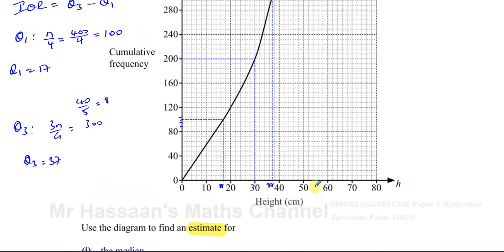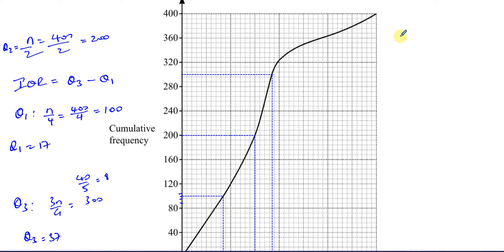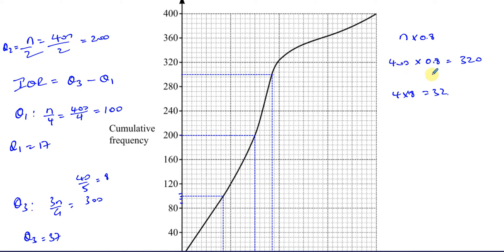Part three says find the 80th percentile. To find the 80th percentile, we take the number of entries and multiply by 0.8: 400 times 0.8 equals 320. Remember, we can't use a calculator in this paper. You can think of it as 4 times 8 equals 32, then adjust for place value by multiplying by 10, giving 320. So we go to position 320 on the cumulative frequency axis.